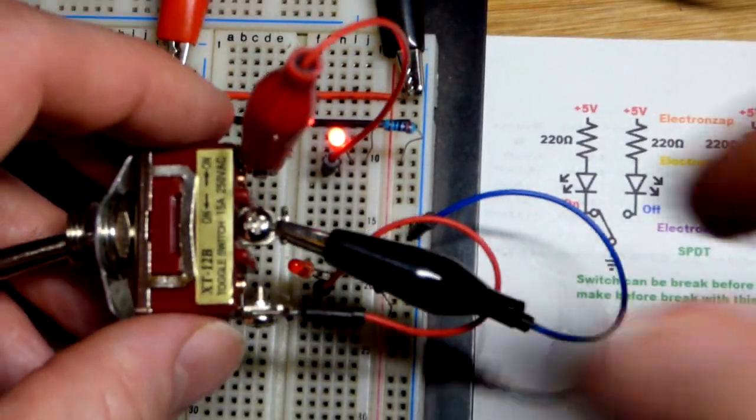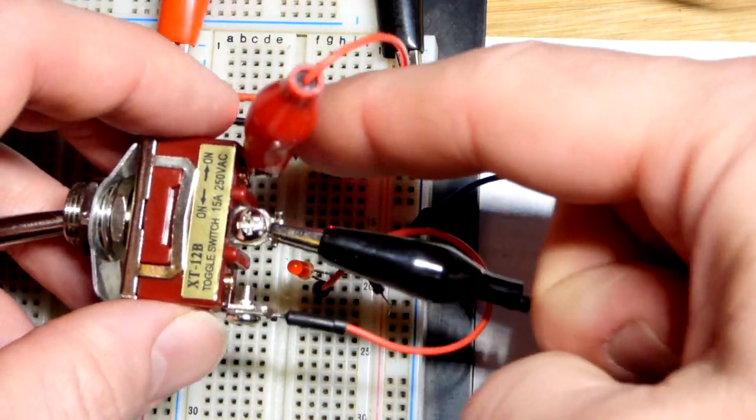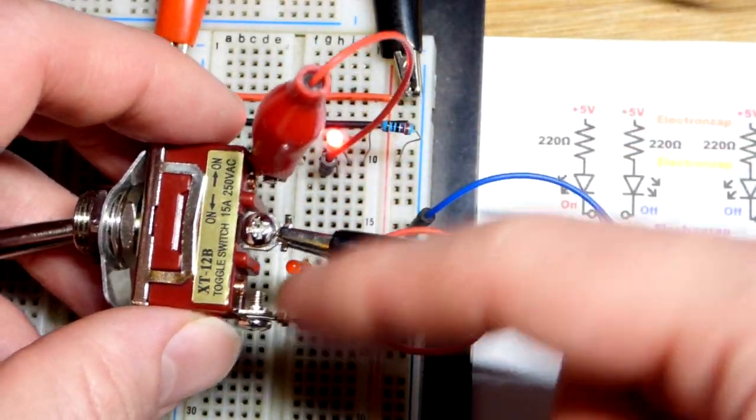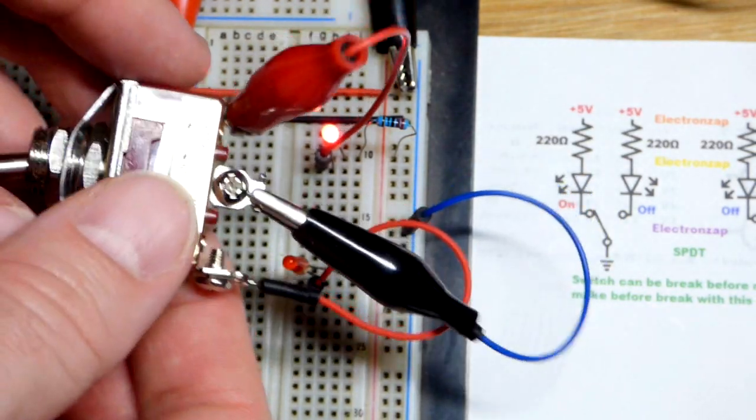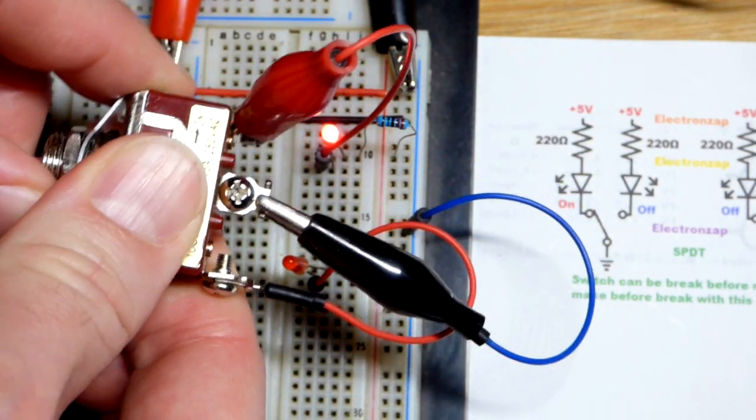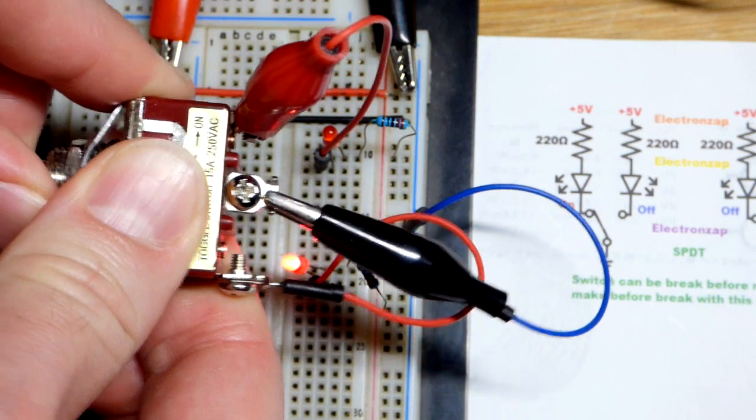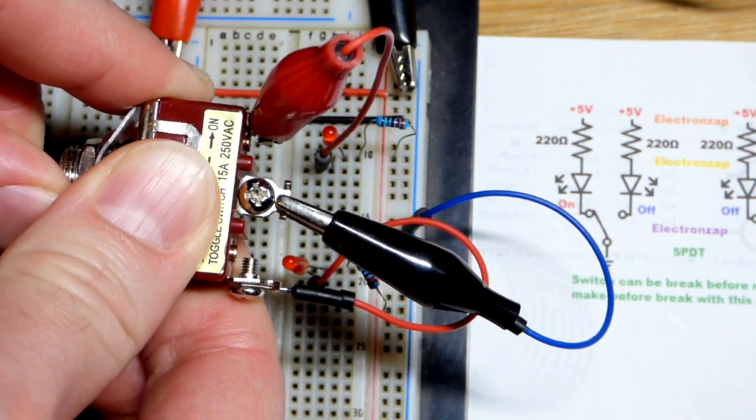There's a problem if you have a circuit where these two terminals can never connect together. Sometimes the switches, if you put them halfway, they'll connect together. So we're going to test that out. I'm going to slide it halfway and if they both turn on then it is a make before break.